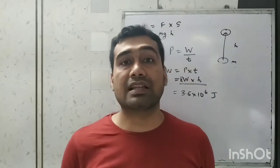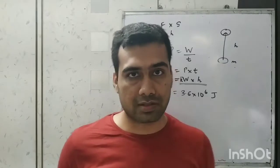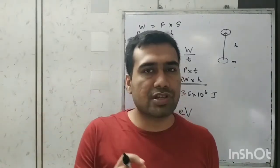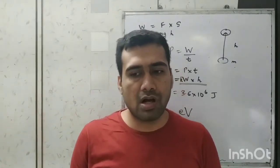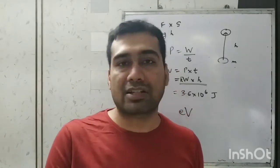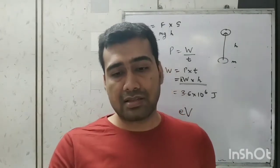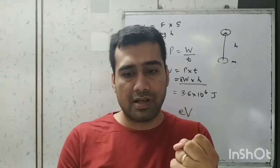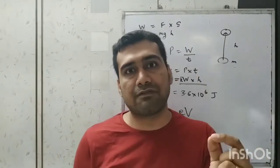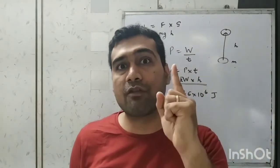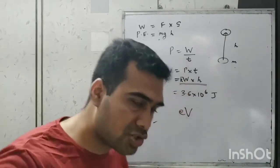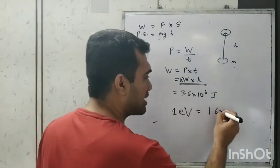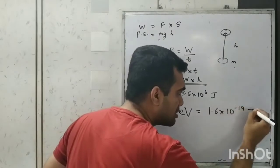Another unit is electron volt, a very small unit of energy used to measure the energy of subatomic particles like electrons. It is defined as the amount of energy gained by an electron when it is accelerated through a potential difference of 1 volt. The conversion is: 1 electron volt = 1.6 × 10⁻¹⁹ joule.